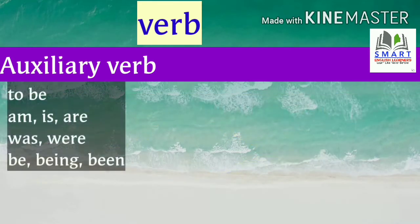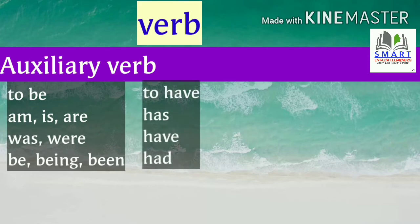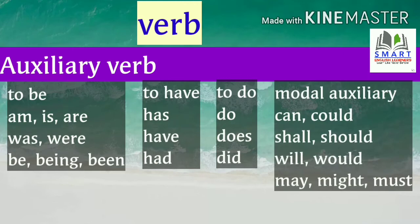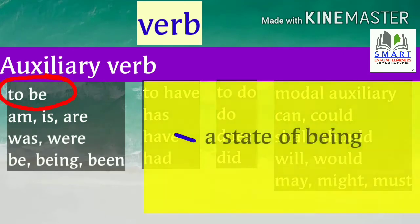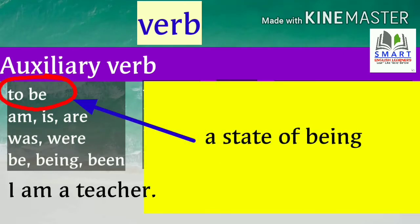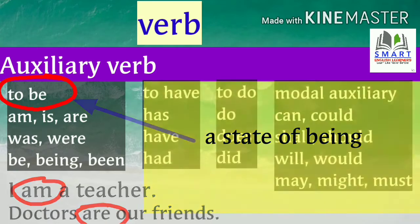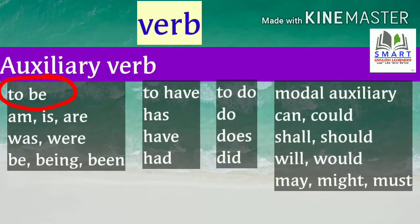Here is the list of auxiliary verbs. The verb to be denotes a state of being. For example: I am a teacher; doctors are our friends. Here, am and are are verbs that show a state of being. Different forms of to be are: am, is, are, was, were, be, being, and been.